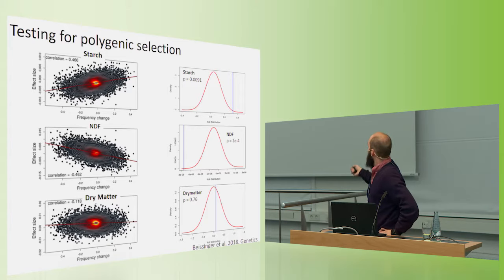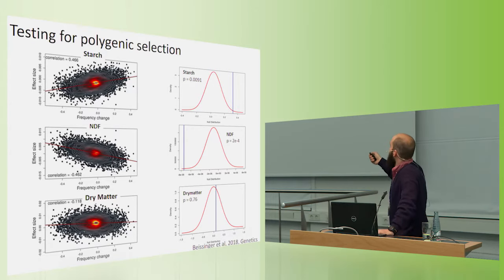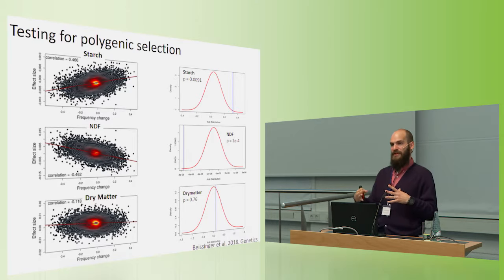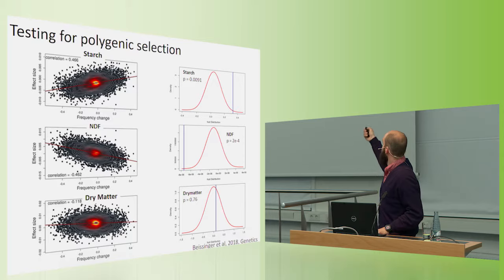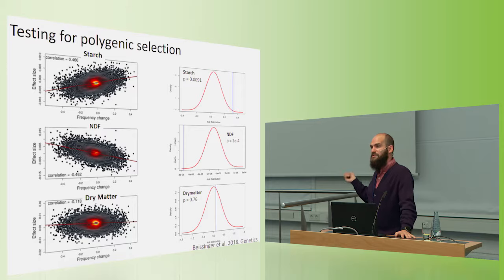But when we implement our test and do the permutation testing, we get much nicer results. So here the red distribution shows our null values and the blue line is the test statistic. So in this WQS population for starch, we did see there's evidence that starch had been under selection. It was a polygenic trait that was selected. Same thing for neutral detergent fiber. And for dry matter, there's no evidence of selection. So this lined up with the expectation.